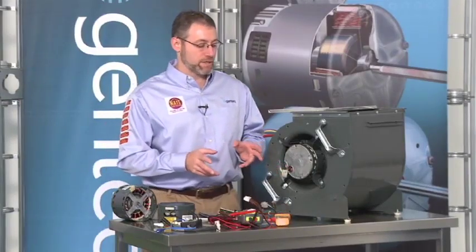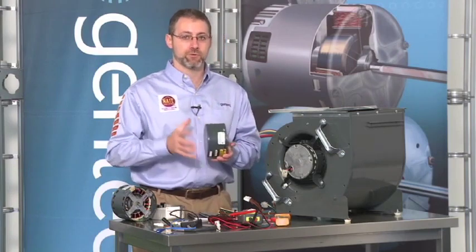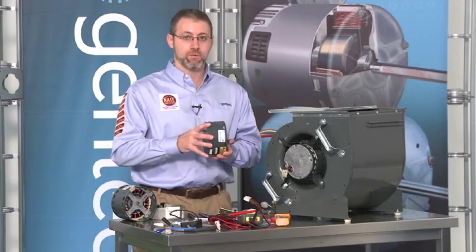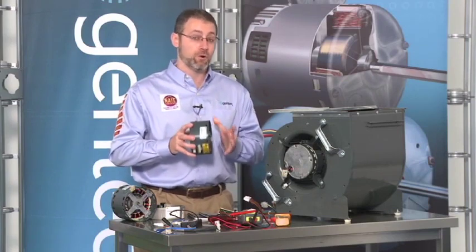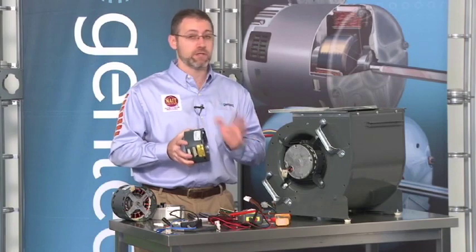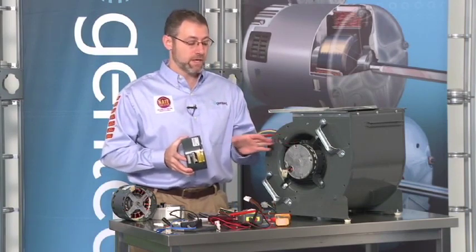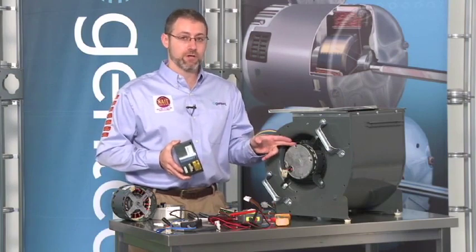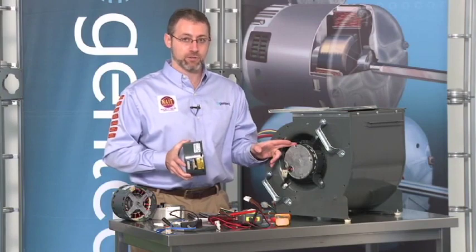So we've diagnosed with our ohm meter that the motor is good. That means that all I have to do is replace the motor control, which you can get motor control separate from the manufacturer only on variable speed motors. That's the only ECM motor you can replace the control separate from the motor. If with our ohm meter we diagnosed that the motor was also failed, then we would have to replace the motor and the control.